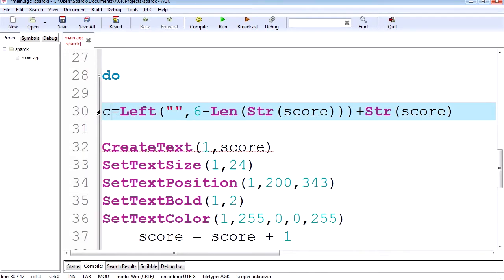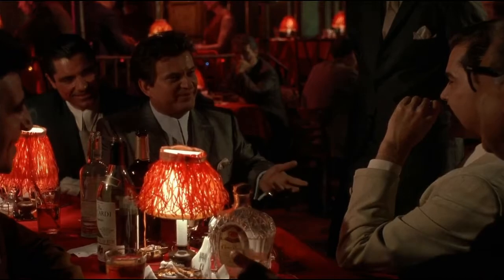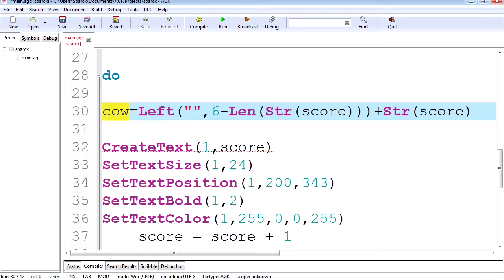Yeah, that's a funny word. Funny how? I mean, what's funny about it? So cow is going to hold this line of code. Yeah, so this is going to transform the score into text. So now instead of the score, we can put cow here. Cow.